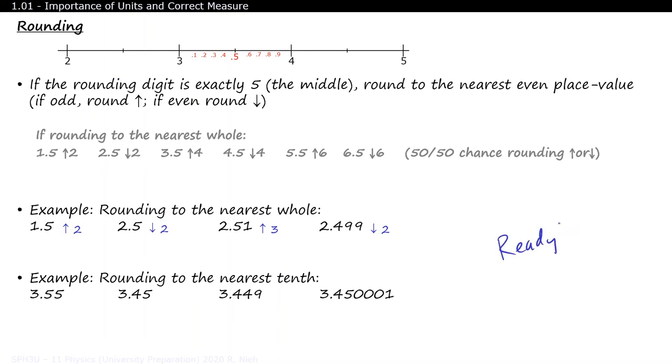Ready for the answers? Remember, this time we're rounding to the nearest tenth. So 3.55 would round up to 3.6. 3.45, well, 4 is even, so we'll round down to 3.4. With 3.449, 49 is less than 50, so we'll round down. And the last example, we're a hairline greater than 5.100, so we'll round up to 3.5. With enough practice, this new rule will become second nature to you in your calculations.